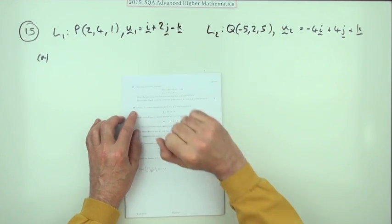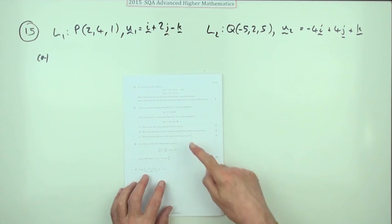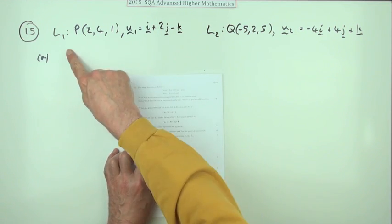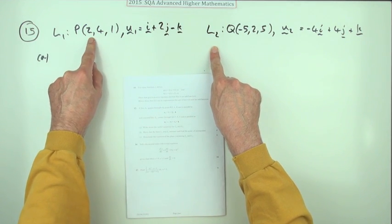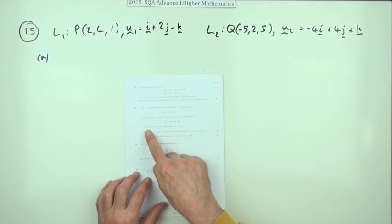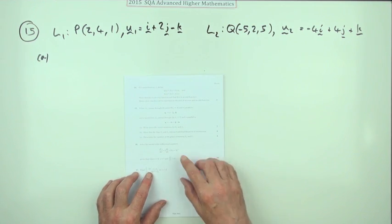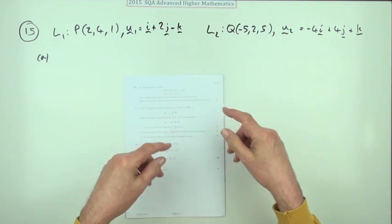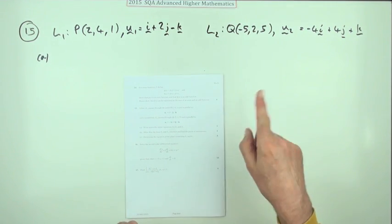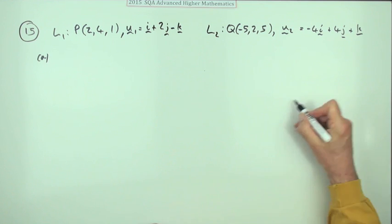Number 15 from the 2015 Advanced Higher Maths — the first of the big questions, the 10-marker on lines and planes. It describes two lines in space by giving a point they pass through and a direction they head in, and it says: write down the vector equations for L1 and L2. Those vector equations are the root equations from which you extract the parametric equations and the symmetric Cartesian equations.